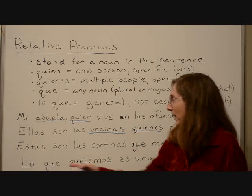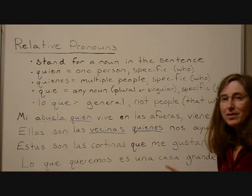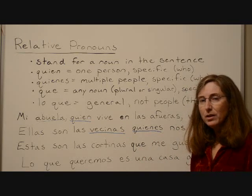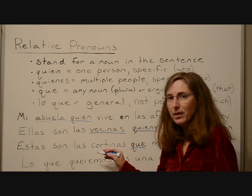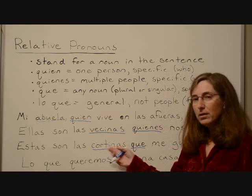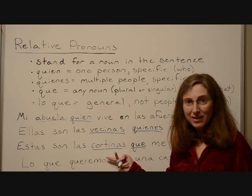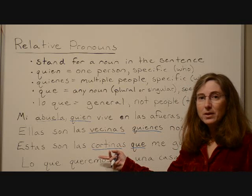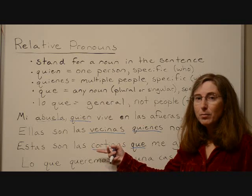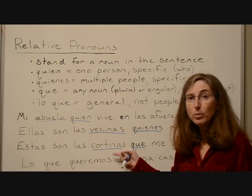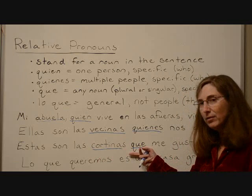Another example: Estas son las cortinas que me gustan — these are the curtains that I like. We have the relative pronoun que, and it's standing for the noun cortinas. Remember, que can stand for people or things, so you could substitute just about anything here — the students, the books, or even a singular like 'this is the book that I like' — and keep the pronoun que. But with quien and quienes, they can only stand for people, and these are very specific nouns.